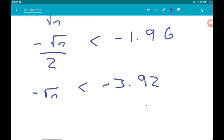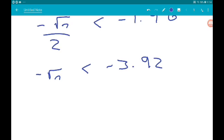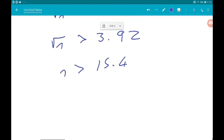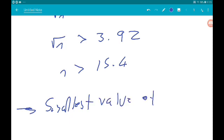Now let's multiply or divide both sides by minus 1. Now remember that flips the inequality sign. So root n is greater than 3.92. Square both sides. N has to be greater than 3.92 squared. Now that gives us 15.4. The smallest value of n is 16. Boom.